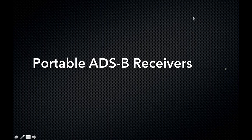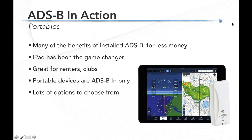Portables have gotten a lot of attention and have outsold installed ADS-B by a huge number. You get a lot of the benefits of ADS-B for less money, and tablets and iPads have been the game-changer — finally there's an easy portable way to display that information. Portable ADS-B is also great if you're a renter in a flying club where you don't control the panel avionics. Remember, portable devices are ADS-B in only, not out, but they offer lots of options to make your app even more powerful.